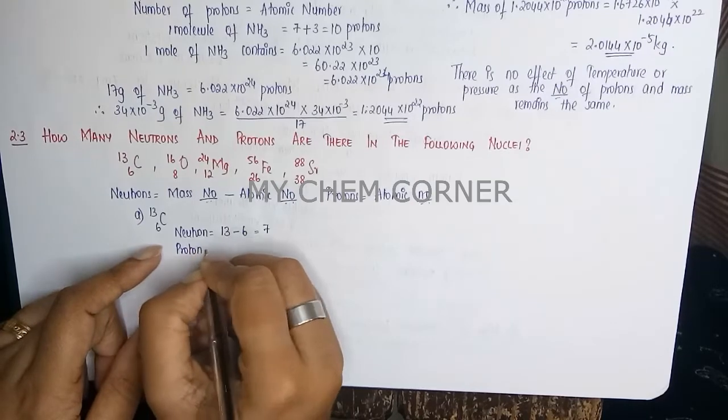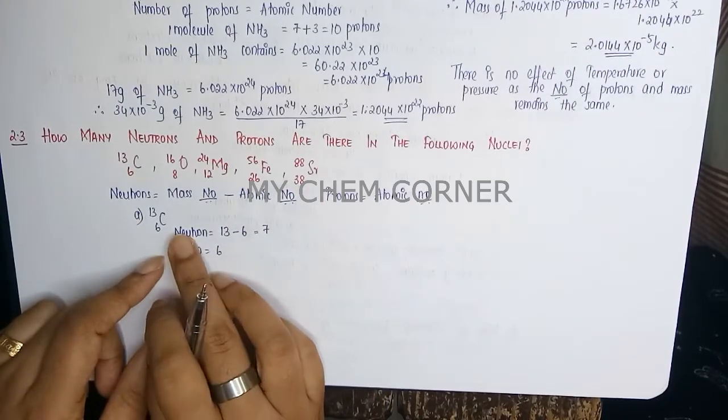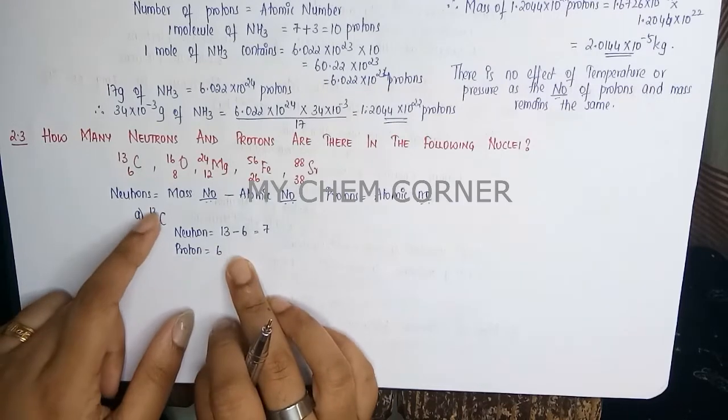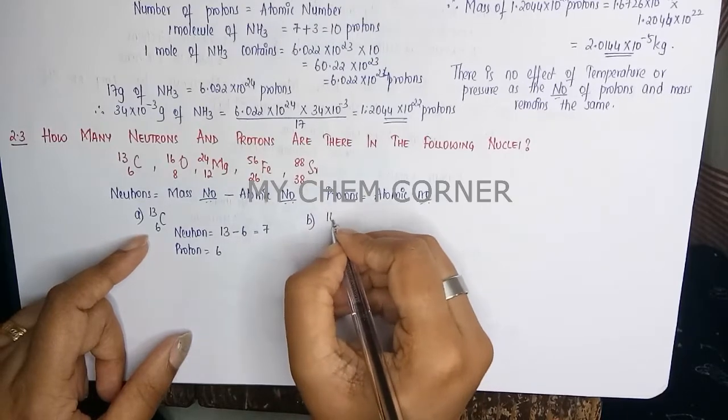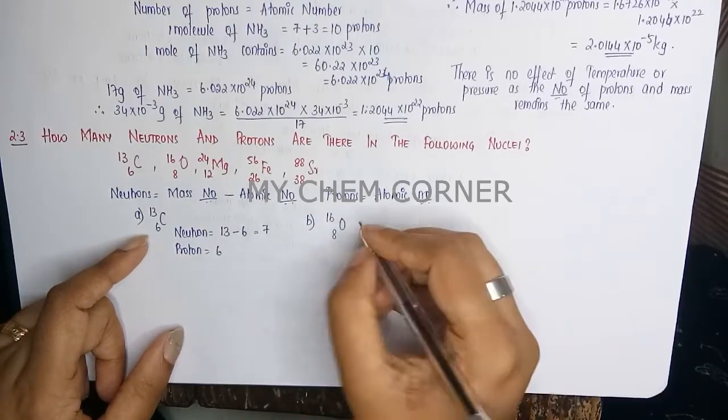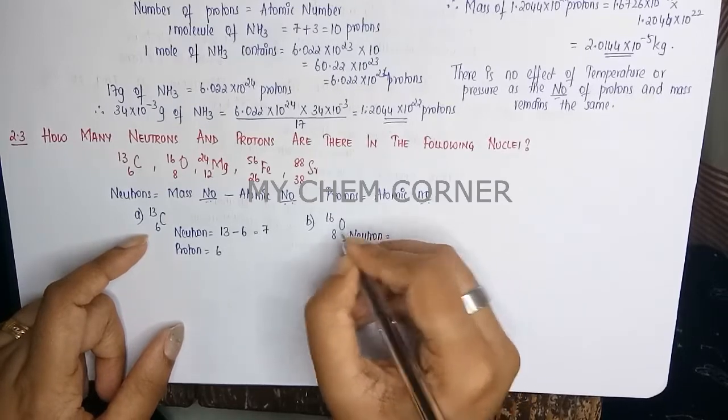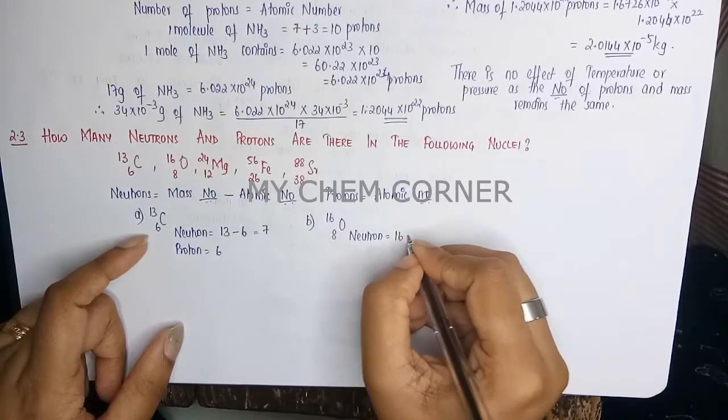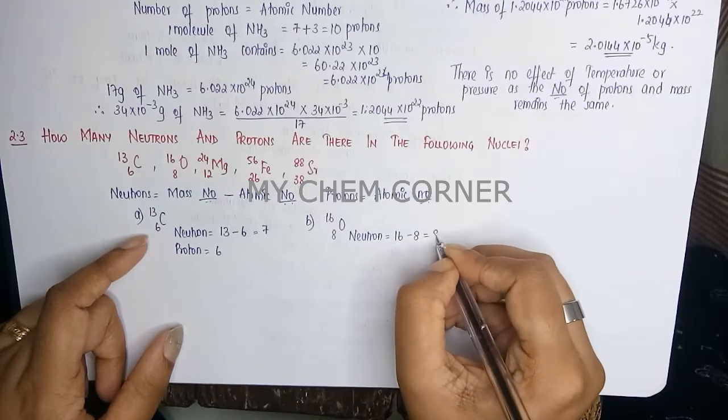Atomic number is what is written down, so 6. So neutron count is 7 and proton is 6 for Carbon-13 isotope. Now the second one is Oxygen. Neutron: atomic mass is 16 minus 8 which is the atomic number, this is going to give 8, and proton count equals atomic number 8.